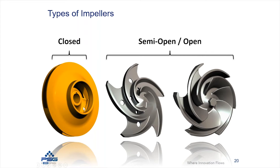The fluid goes through the internal passageways of this closed impeller. These impellers are desirable when it comes to hydraulic efficiency because you can control the flow passage very well within the impeller itself, and you can design these pumps to operate at high efficiencies.